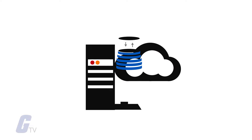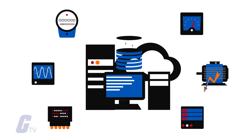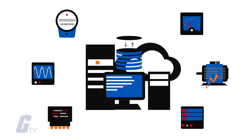A SCADA system works by operating with signals that communicate via channels to provide the user with remote control of any equipment in a given system.